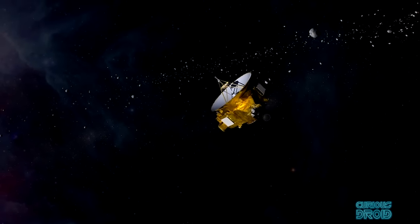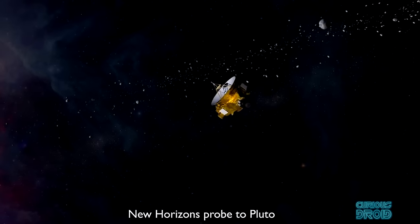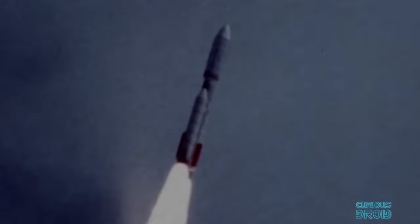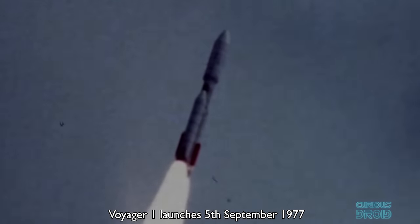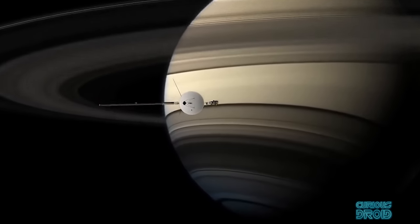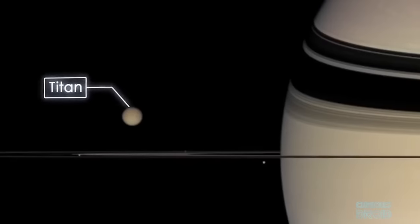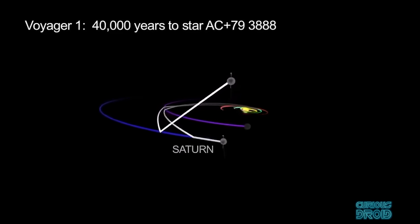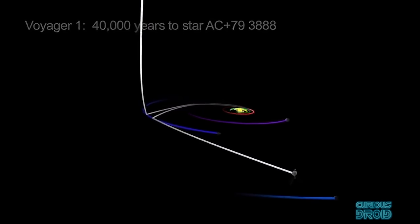This same technique of gravity assist has since been used on the Galileo, Cassini, and the New Horizons missions. Voyager 1 launched three weeks after Voyager 2 on a quicker route to visit Jupiter and Saturn and do a flyby of Saturn's moon Titan, but this would then put it on an upward trajectory and out of the plane of the solar system to interstellar space.